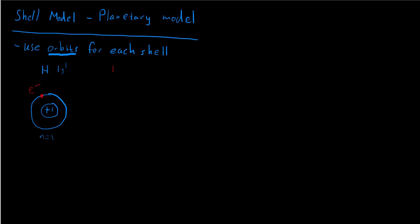If we were drawing the picture for helium, helium has the electron configuration 1s2. What's different about it is it has two protons in the nucleus, so a plus two charge. We draw the same ring and then put two electrons in that ring: one, two.